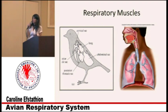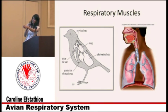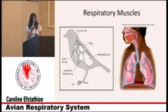Here's a diagram showing just one giant cavity, with the lung dorsally positioned, compared to mammals where the diaphragm actually separates the thoracic and abdominal cavities.